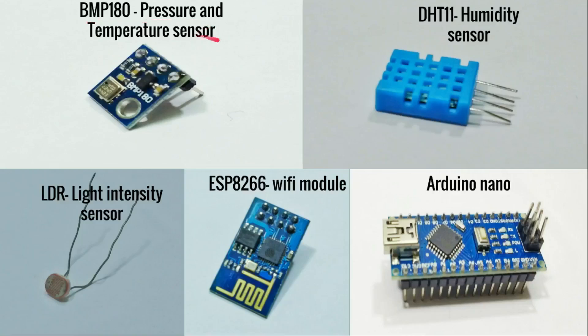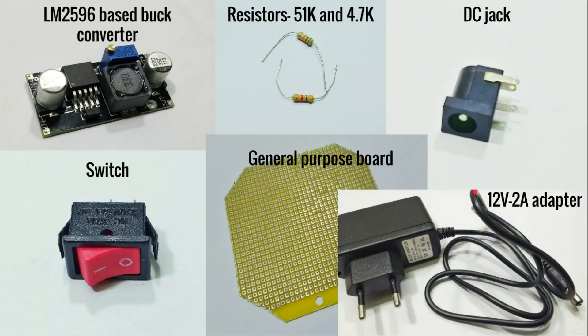BMP180 pressure and temperature sensor, DHT11 humidity sensor, LDR light intensity sensor, ESP8266 WiFi module with firmware ready, an Arduino Nano, LM2596 based buck converter, two resistors - 51K and 4.7K, a DC jack, switch, general purpose board, and a 12 volt 2 ampere adapter.